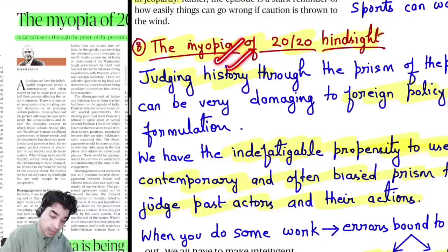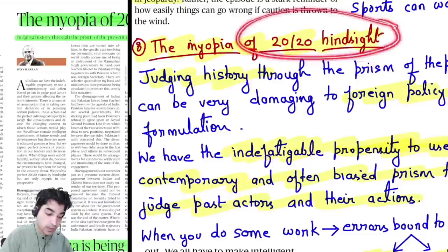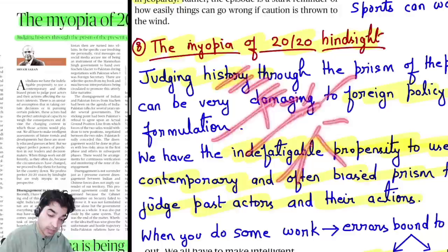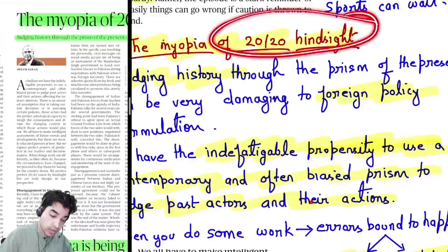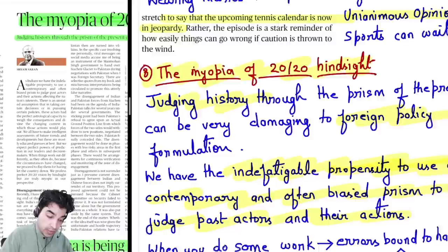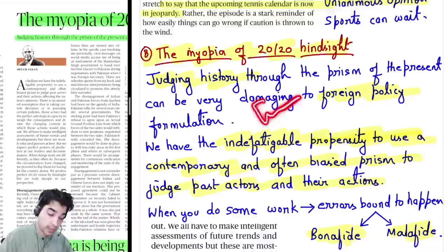Eighth news: the myopia of 2020 hindsight. We often judge history by saying 'if he had done this 20-30 years ago, things would have been different.' Saying this in hindsight is very easy. But real-time decision-making involves prevalent conditions and different factors — that is a different matter entirely. Judging history through the prism of the present can be very damaging to foreign policy formulation.